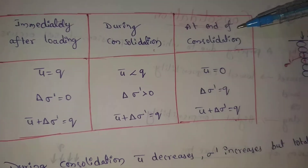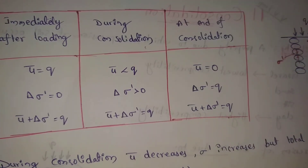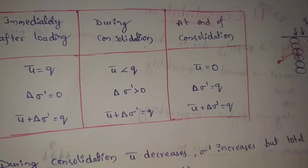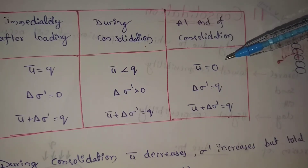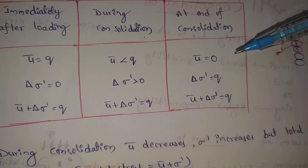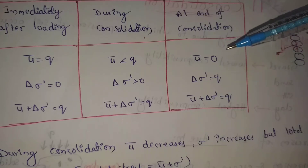At the end of consolidation — consolidation complete — pore water pressure u-bar is equal to 0. And the change in effective stress, delta sigma-dash, is equal to q.